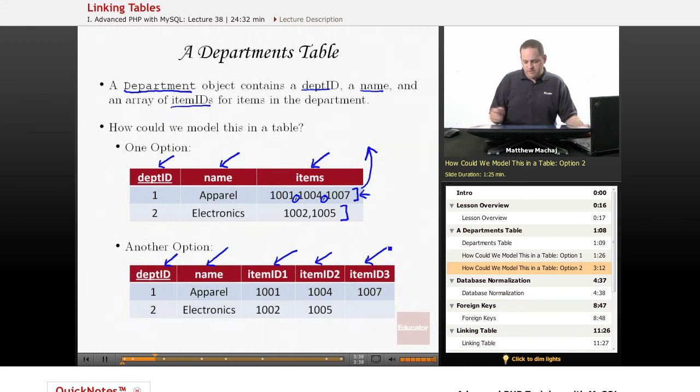In this particular case, the first item, if it was the same exact data as up here, it would have three values, 1001, 1004, 1007. And so all of those columns would be filled up. However, our electronics department only has two items, so it has this empty column here.